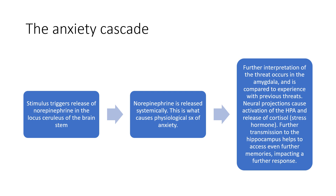Let's look at the anxiety cascade. The first thing you have is a stimulus. The stimulus triggers release of norepinephrine in the locus coeruleus of the brain stem, and then norepinephrine is released systemically. This is what causes the physiologic symptoms of anxiety. Further interpretation of the threat occurs in the amygdala and is compared to experience with previous threats — your brain recognizes what has happened before. Then neural projections cause activation of the HPA, hypothalamic-pituitary adrenal axis, and release of cortisol, the stress hormone.